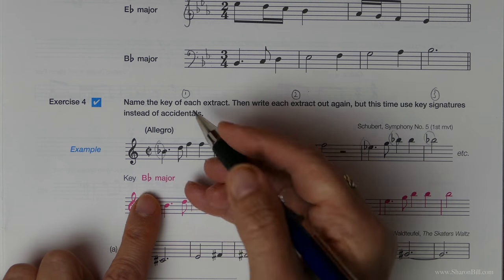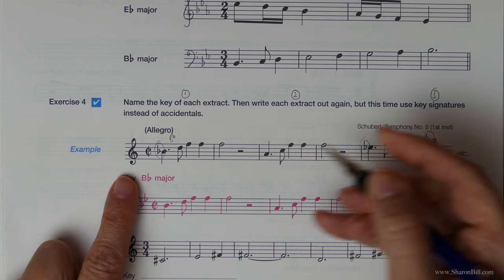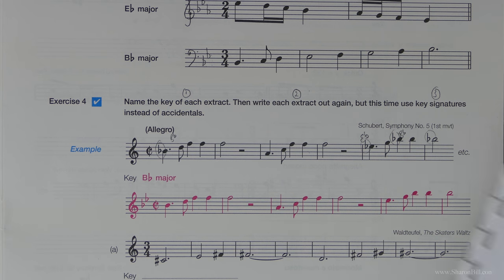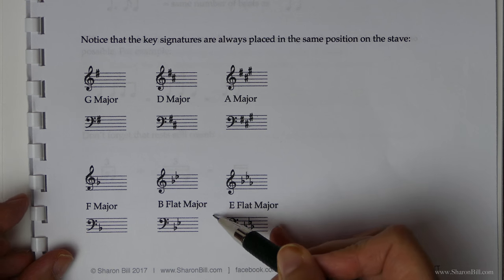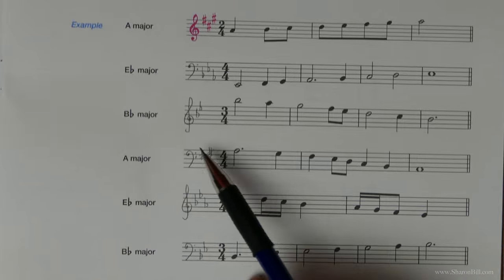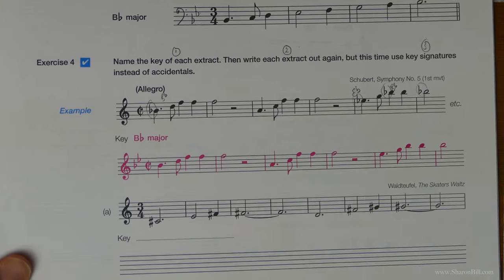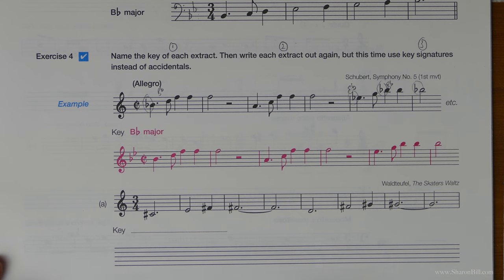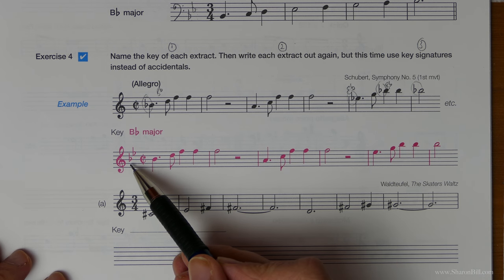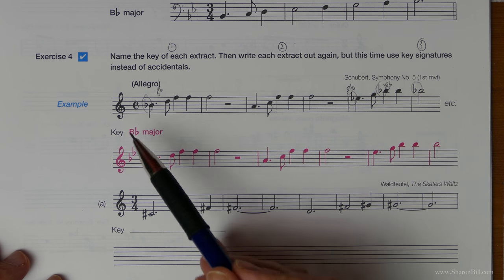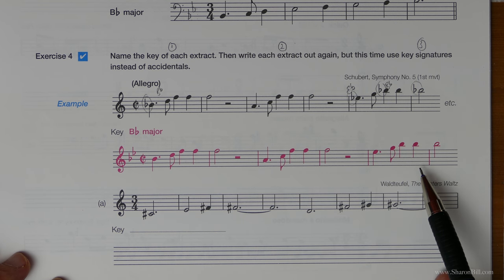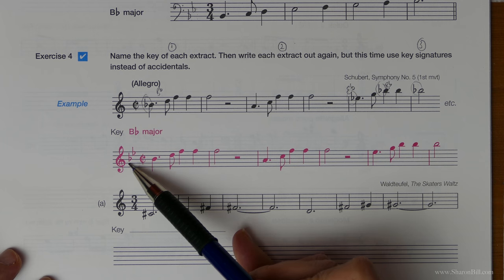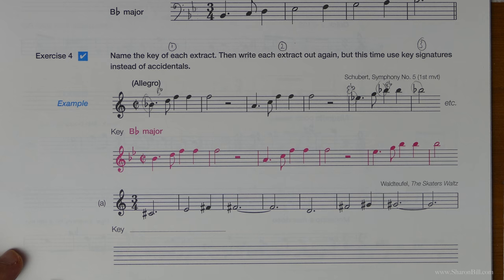We've got some clues here: a B flat, we're in treble clef, an E flat, and a top B flat as well. So we've got B flats and E flats. If we refer to our sheet, B flats and E flats means we must be in B flat major, because we're using all of the notes common to that key. The key signature replaces all of these accidentals - it will sound exactly the same, but the key signature tells us to remember to play them all the time rather than writing them each bar.